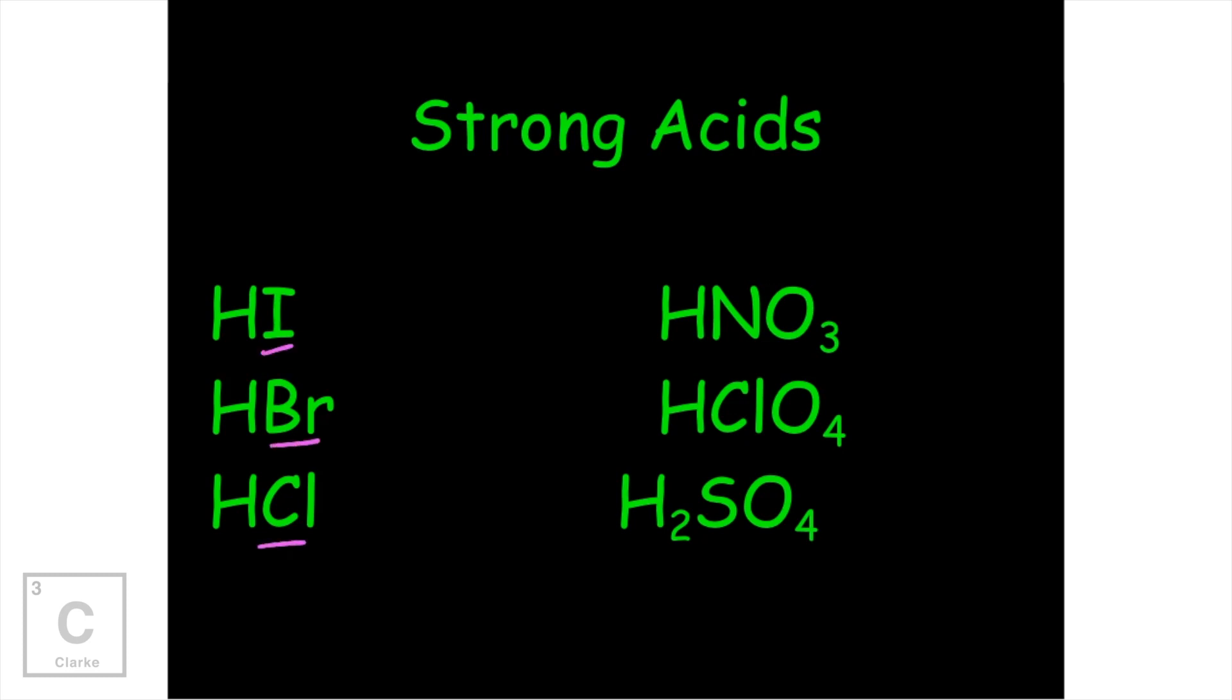But let me give you a little tip on making the memorization a little bit easier. These are all halogens, but not fluorine. Halogens, when they're in an acid, except for fluorine, are going to make a strong acid. So we've got chlorine, bromine, and iodine. And then these polyatomic ions, you're just going to have to memorize these. That's just all there is to it. And you really do need to identify strong acids and strong bases.